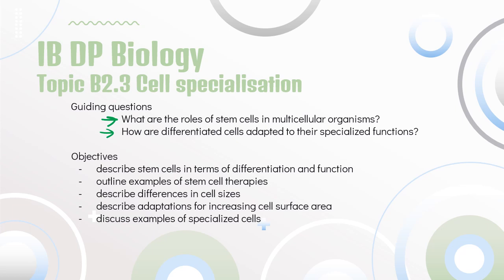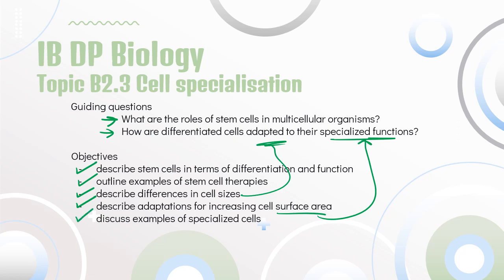Our objectives: we are going to describe stem cells in terms of differentiation and their functions. We're going to outline some examples of using stem cells in therapies. We're going to describe differences in cell sizes and how that makes them adapted to their specialized functions, including adaptations for increasing cell surface area. And we will wrap up with a discussion of some examples of specialized cells.